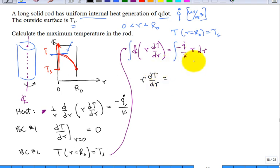Let's take a look over here. Well, we have the minus q dot over k that comes outside. We have the integral of r dr. That's going to pick up the 1 half r squared.